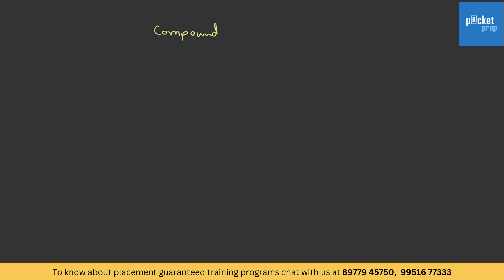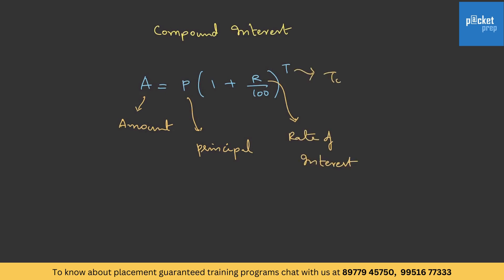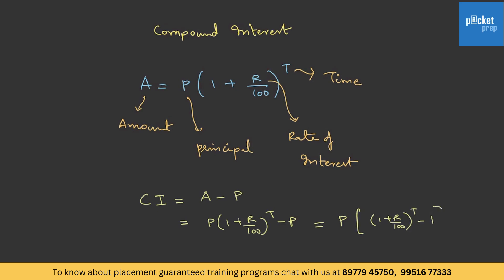Now let's get into the formula. In compound interest, amount equals principal into (1 + r/100) to the power t, where A is the amount, P is the principal, r is the rate of interest, and t is the time for which the amount has been taken. If you want to calculate the compound interest, it is basically amount minus principal. Therefore CI = P × (1 + r/100)^t − P. Taking P common: CI = P × [(1 + r/100)^t − 1].